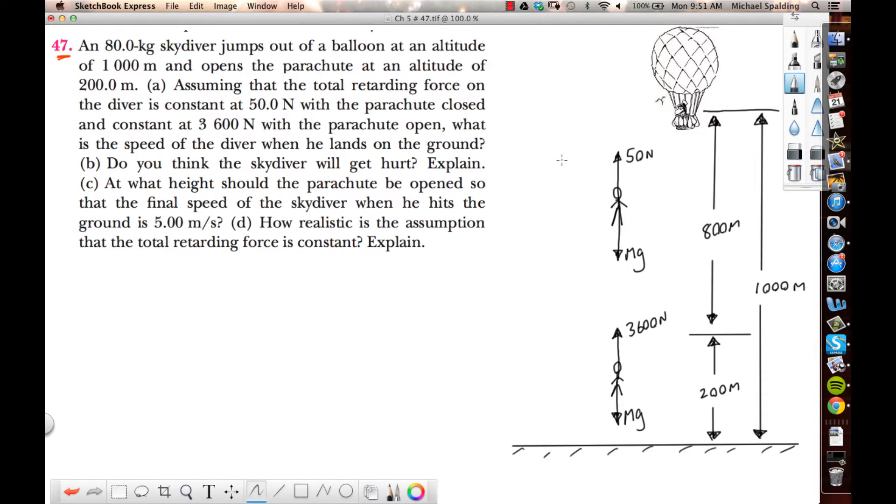So we have this 80 kilogram skydiver. Here he is up here in the balloon. The mass of this guy, m, is 80 kilograms. His velocity when he first jumps is zero, he jumps from rest. He starts at an altitude of a thousand meters, and he opens the parachute when he's at an altitude of 200. So this thousand gets broken up into 800 and 200.